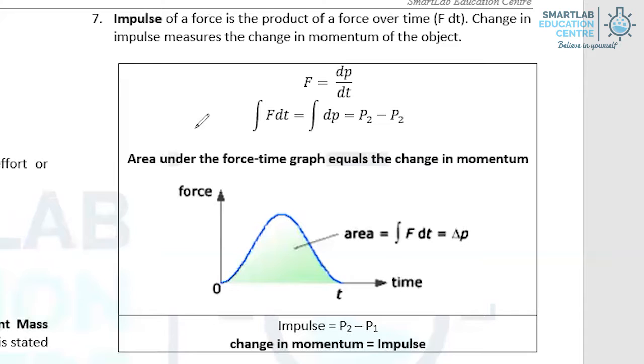There's another term that you need to be familiar with, which is termed as impulse. Impulse is the product of a force over time. And impulse measures the change in momentum of the object. So impulse, like force, is also a vector.